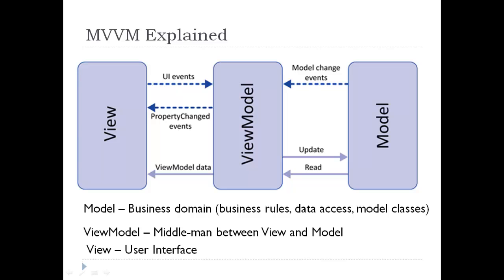Now let's come to MVVM. As the name suggests, it is Model-View-ViewModel. We have three different points: model, view, and view model. The model basically contains the business domain logic, business rules, data access model classes, etc. The view model acts as a middleman between the view and the model. The view obviously has the user interface.